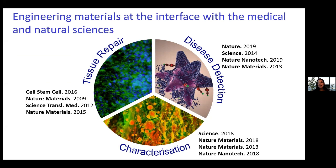I'm going to show you some examples today in the therapeutics area and also in disease detection. Underlying that will be some of the characterization methods, including ones that we've invented within the group when we've been unable to get enough information from conventionally available techniques.